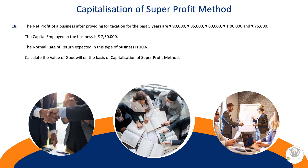18th question: The net profit of the business after providing for taxation for the past 5 years are Rs. 90,000; Rs. 85,000; Rs. 60,000; Rs. 1,00,000; and Rs. 75,000. The capital employed in the business is Rs. 7,50,000. The normal rate of return expected in this type of business is 10%. Calculate the value of goodwill on the basis of capitalization of super profit method.